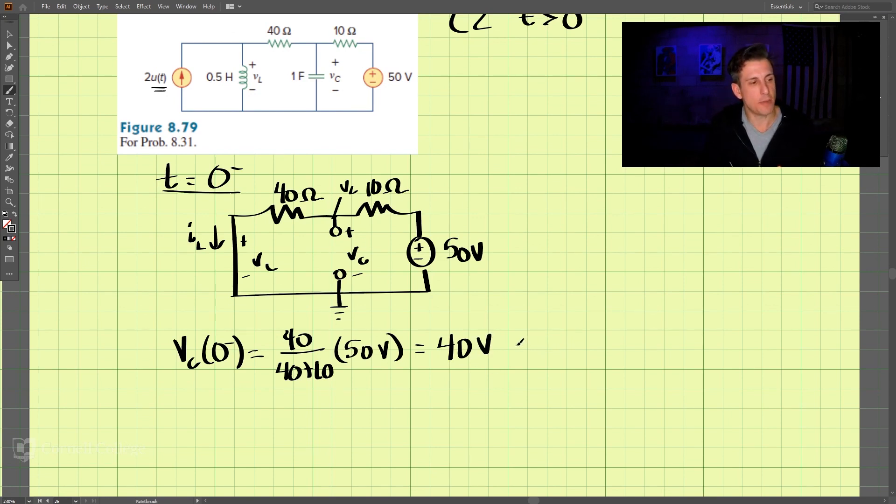And since that's a capacitor, we also know that VC(0+) is this 40 volts. And IL, our current through the inductor at 0 minus, is equal to our 50 volts divided by the total resistance, which is 50. So that is equal to 1 amp, and because that's an inductor, we also know that equals IL(0+).